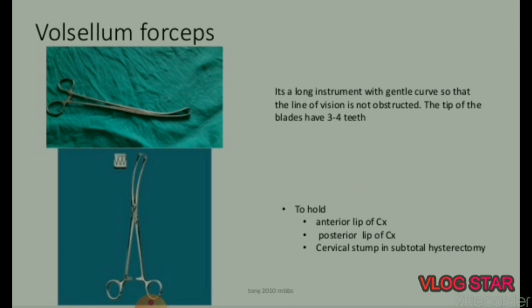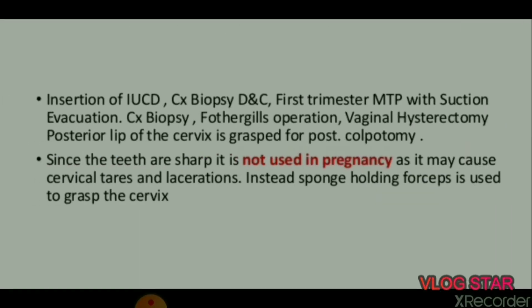Next instrument is Volsellum forceps. It is a long instrument with a gentle curve so that the line of vision is not obstructed. The tip of the blades has three to four teeth to hold the anterior lip of the cervix, posterior lip of the cervix, and cervical stump in subtotal hysterectomy.